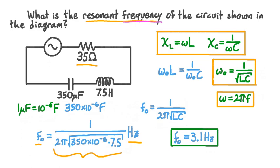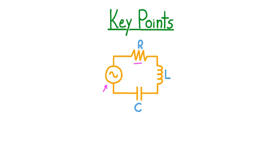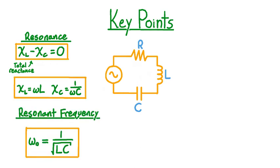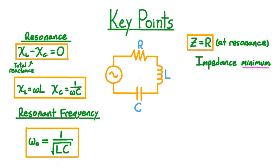Let's review the key points from this lesson. We considered a series RLC circuit driven by an alternating voltage source. Because inductive and capacitive reactances both depend on frequency, we found a frequency where the total reactance is zero. The resonant angular frequency ω₀ equals 1 divided by the square root of inductance times capacitance. At resonance, the inductor and capacitor provide no opposition to current, the impedance equals the resistance, and by Ohm's law the current amplitude is at its maximum.